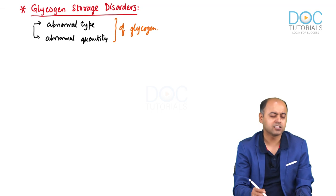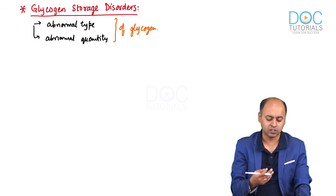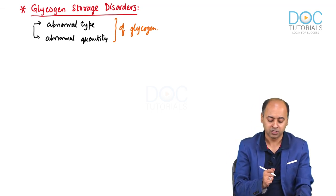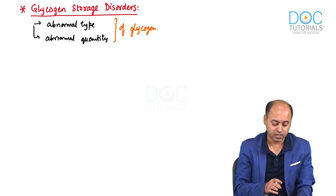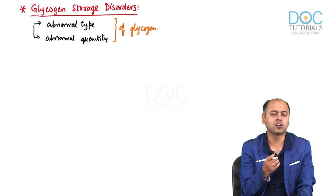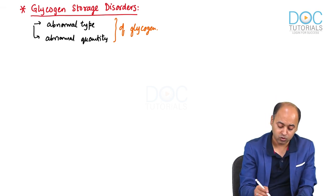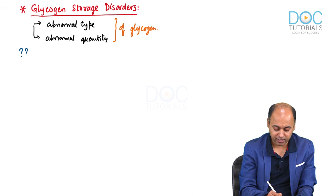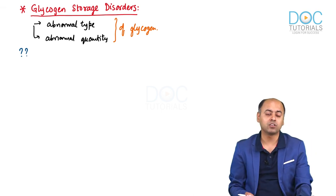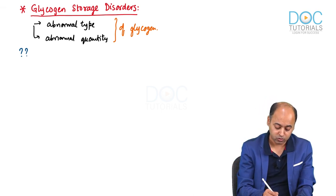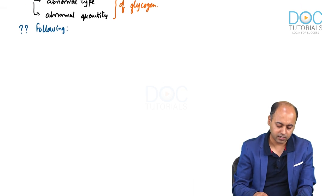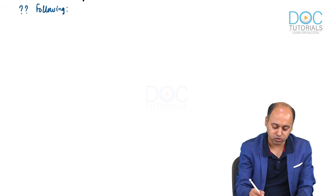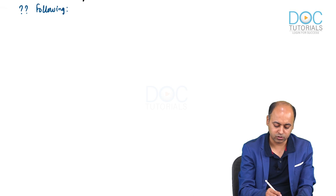The deposits can occur either in the muscle or in the liver, or rarely at other places. The first challenge will be to identify that we are dealing with glycogen storage disorder. If you have the following features, you can categorically say that we are most likely dealing with glycogen storage disorder.